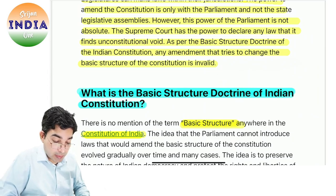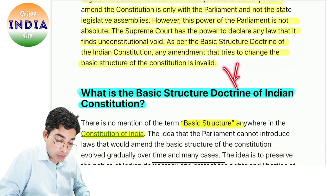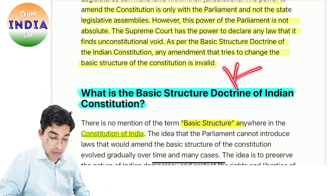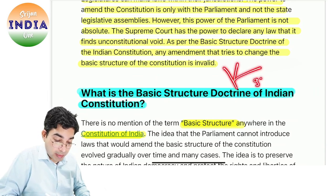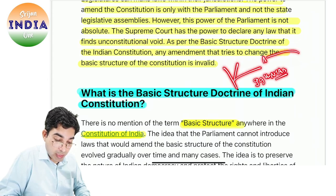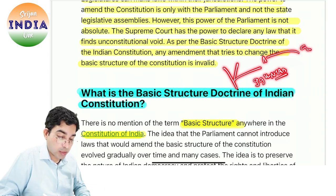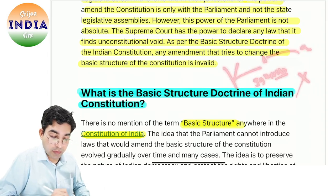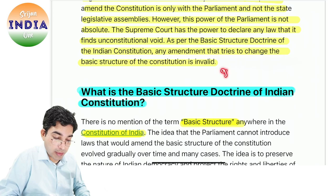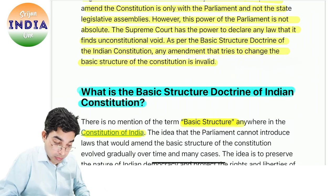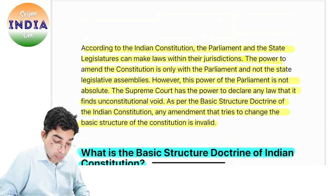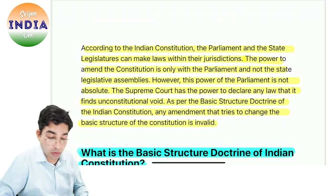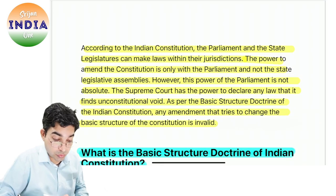Jaise Basic Structure Doctrine bolta hai ki separation of power hona chahiye. 99th constitutional amendment aaya jisne separation of power mein judiciary ki appointment mein executive ka say hone laga. Supreme Court ne usko ultra vires kiya aur 99th amendment ko out kar diya. So this is what the Basic Structure Doctrine is — judicial review.